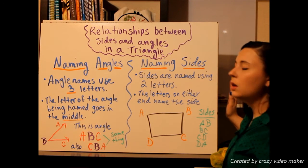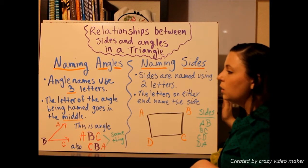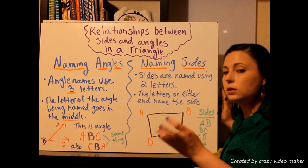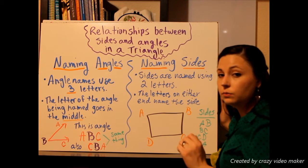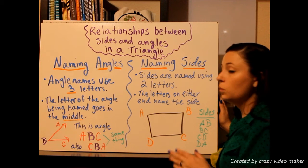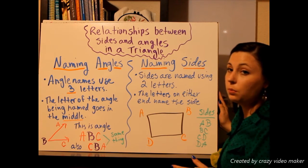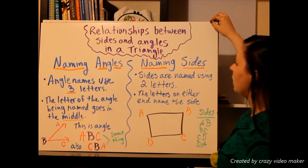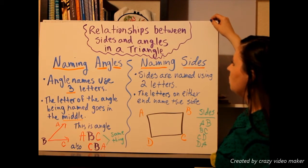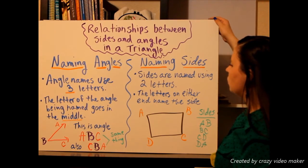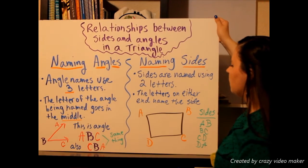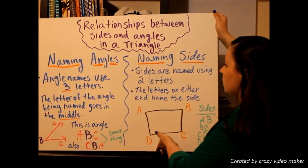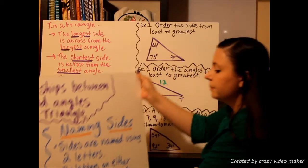This is important because when we are talking about the angles and the sides in the triangle, we have to make sure we're naming them properly. Now we're going to move on to what the relationships between the angles and the sides in the triangle are.